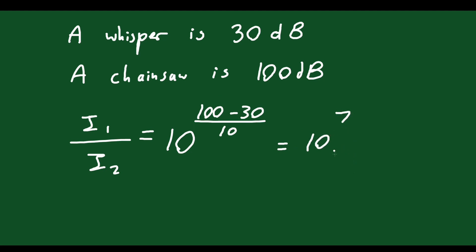That's a massive number — 10 million. A chainsaw is 10 million times as intense as a whisper. And that makes sense!